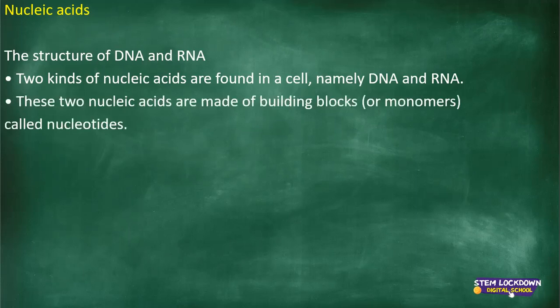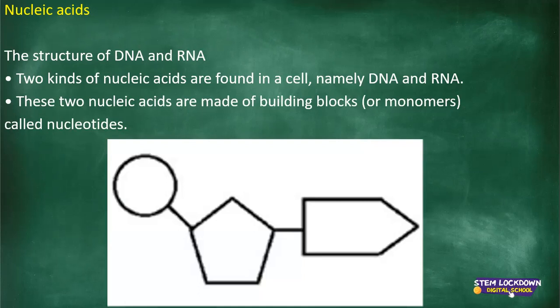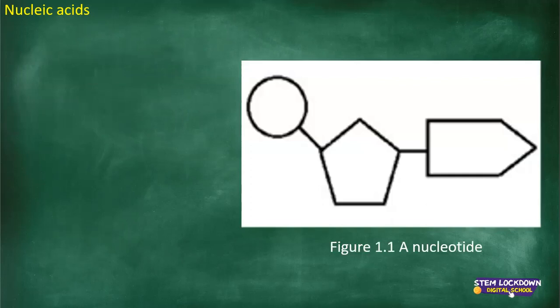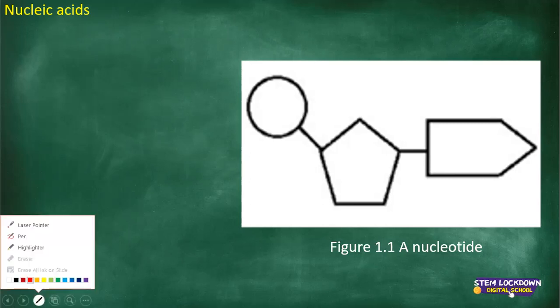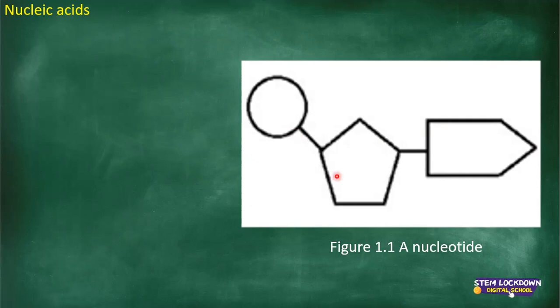DNA and RNA are made of building blocks also called monomers. The specific monomers found in nucleic acids are nucleotides. Nucleotides are the monomers or building blocks which make up the nucleic acids. Lots and lots of these make up what we call nucleic acids — in singular form it's the nucleotide.